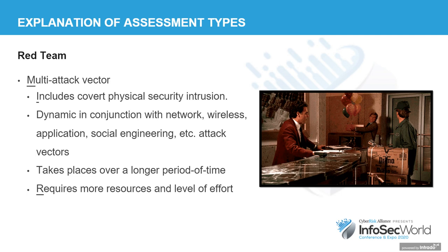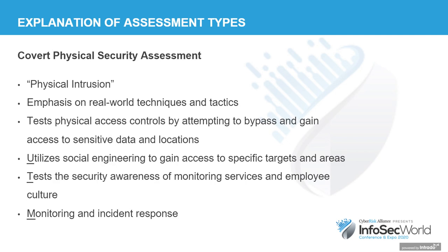A red team also takes place over a longer period of time. When we do covert or overt walkthroughs, we're usually given about a week, sometimes two. Whereas a red team has several different elements and takes place over a longer period with more covert methods of technical entry for your network. Covert physical security assessment is essentially physical intrusion — simulating real-world attacks. If a criminal wanted to get in, how would they do it? What tools do they commonly use? There are custom tools Brent and I have made that we utilize for these assessments.